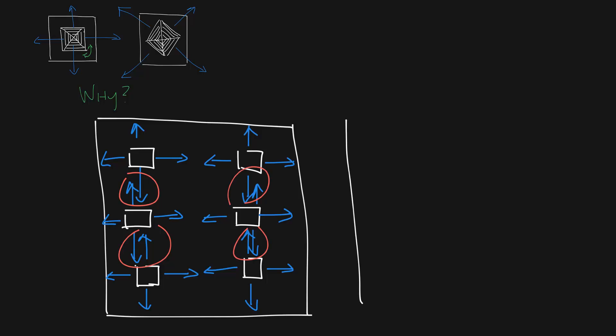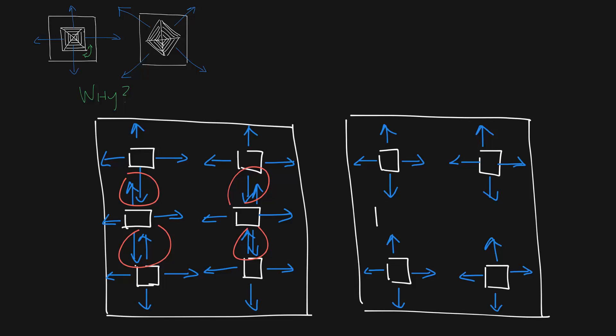So what you could do instead is let's put our four diffusers back in the space. Now you take the two diffusers between them and put them in a corner blow pattern so their airflow goes like this.